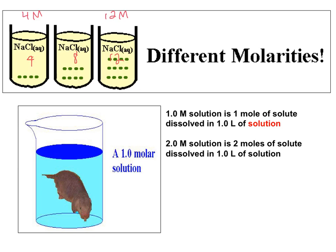Looking at the picture in the lower left, you can see a 1 molar solution. The M is defined as molar, and that tells us that one mole of solute is dissolved per one liter of solution. If we were to change that to 2 molar, then it would be two moles of solute dissolved in one liter of solution.